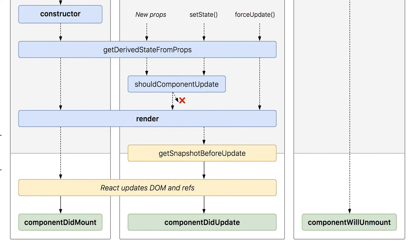So getSnapshotBeforeUpdate is getting the current state of the DOM before changes are applied, doing the calculations, and saying: okay, do this. It is applying the required visual changes whenever some change is coming to the UI. Simple example — you have a chat list, you keep adding messages, but when your chat list becomes full, how will you know? getSnapshotBeforeUpdate can do the scroll height check. Within this method, it can return null or it can return some value.